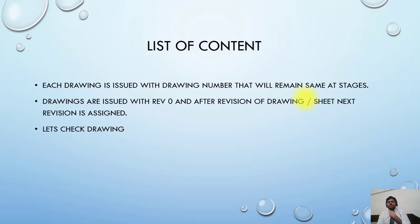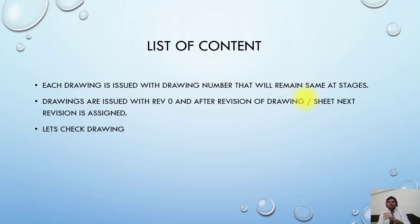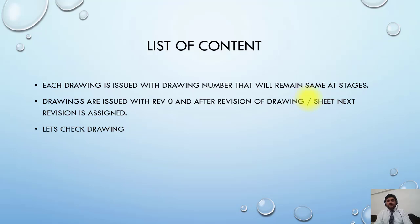Drawings are used with revisions starting from zero. There are two ways to handle revision numbering: one way is that if one sheet is changed in a new revision, you can change the revision number of the complete drawing. The better way is to change the revision number of only that drawing sheet where the change occurred. Both practices are used.